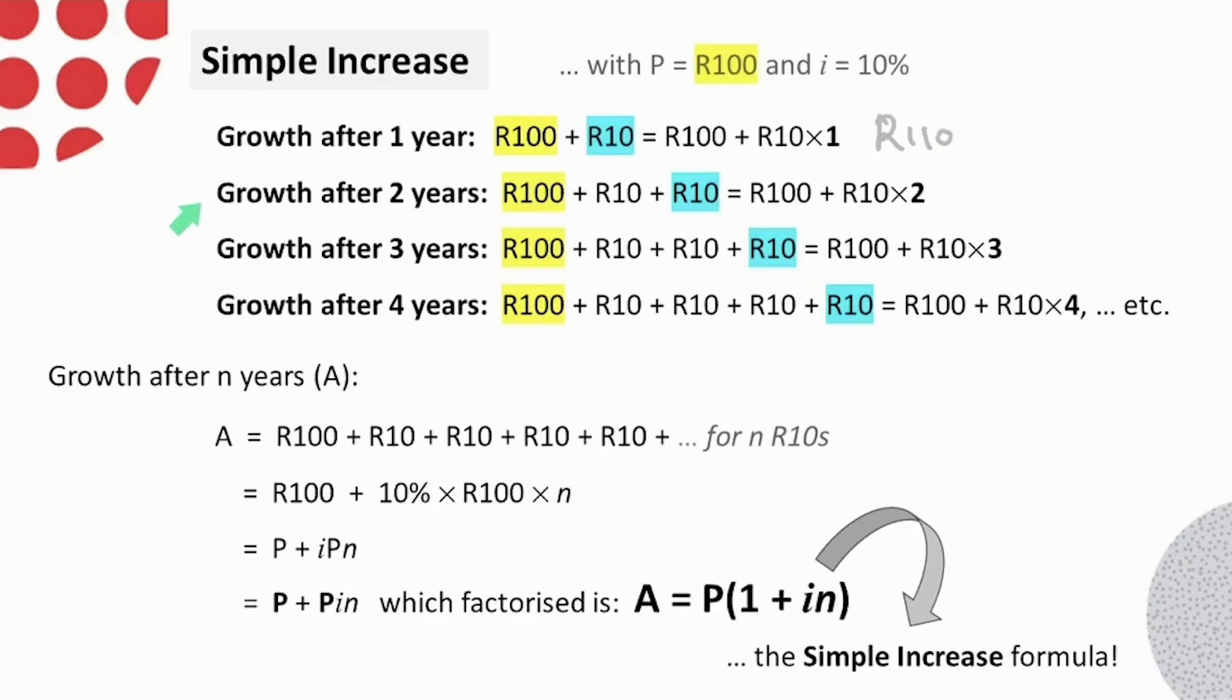After the second year, A would be 120 rand. After the third, A would be 130 rand, and after the fourth, A would be 140 rand, etc.